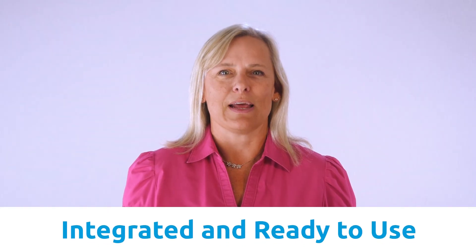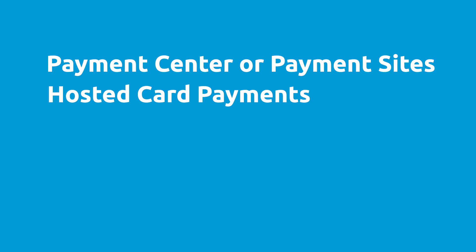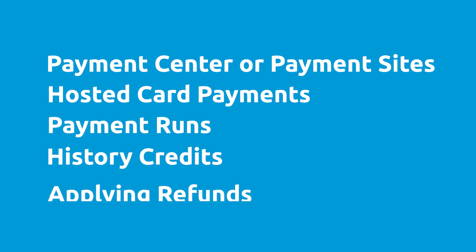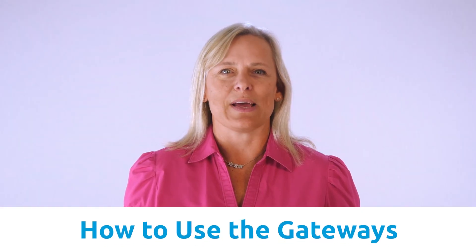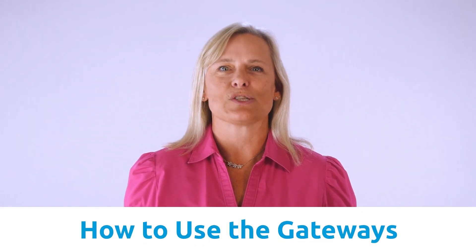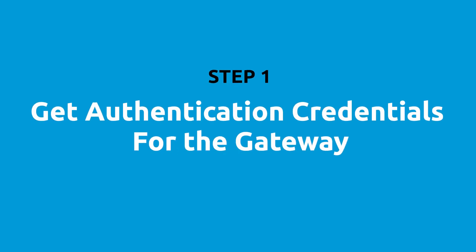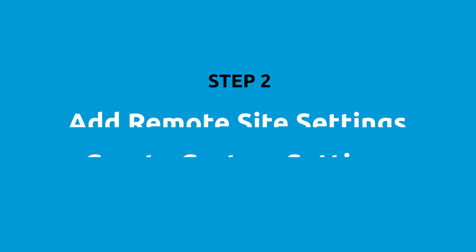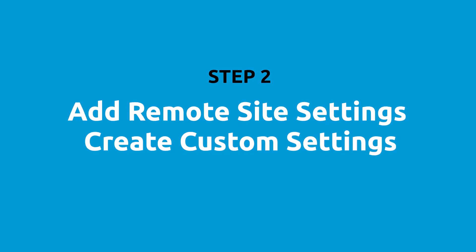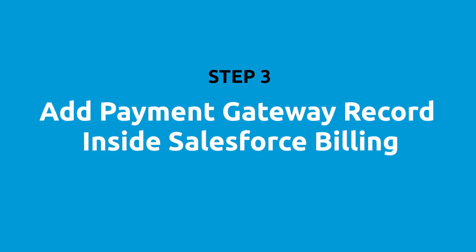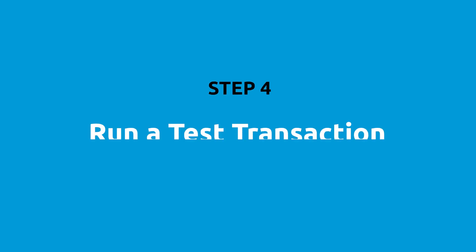Each of these gateways are integrated and ready for you to use out of the box, whether you're using Payment Center or payment sites, hosted card payments, payment runs, issuing credits, or applying refunds. Whichever payment feature you use, the system will automatically create the payment and payment allocation records. Here's how to use these gateways — the steps are the same for each. Step 1: get your authentication credentials for the gateway. Step 2: add the remote site settings and create the custom settings. Step 3: add a payment gateway record inside Salesforce billing setup. Step 4: run a test transaction.